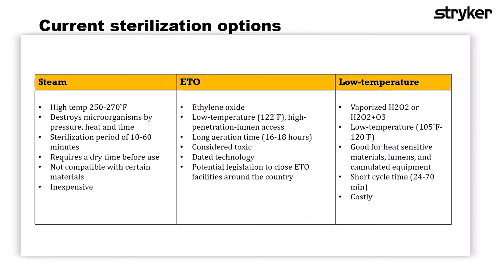Steam is probably the most common modality we see utilized. It uses high temperature — the majority of the time 270 degrees — for a set amount of time depending upon how your steam sterilizer is configured. It destroys all microorganisms by a mechanism of pressure, heat, and time. The sterilization process takes anywhere from 10 to 60 minutes, and that 10-minute period is your flash sterilization process. It also requires a dry time and cooling period afterwards before instrumentation can be used.